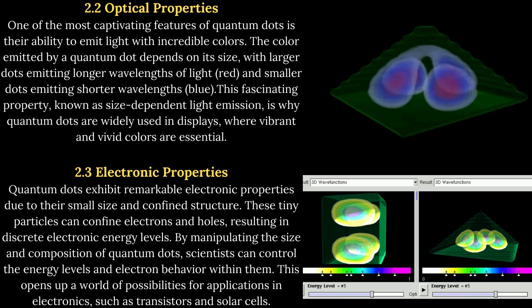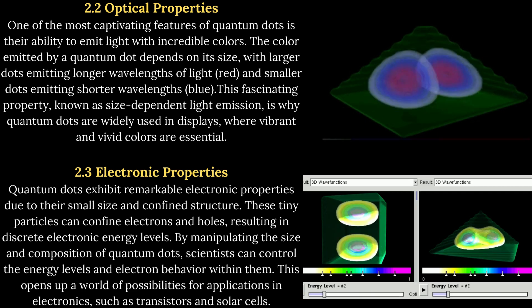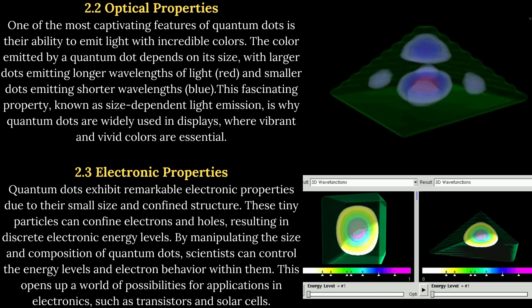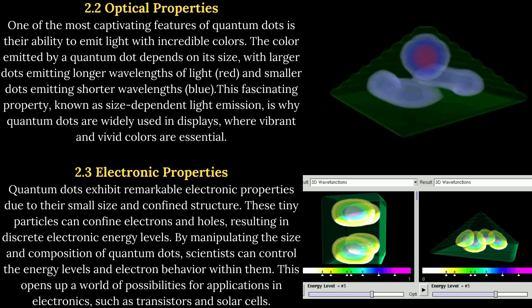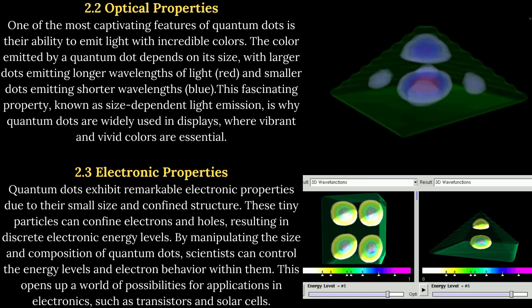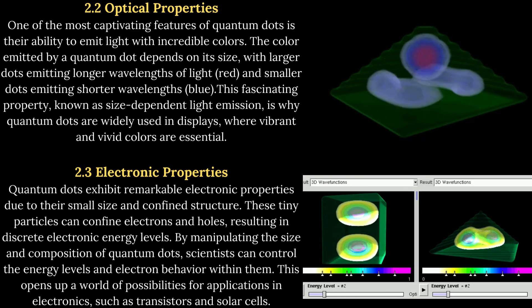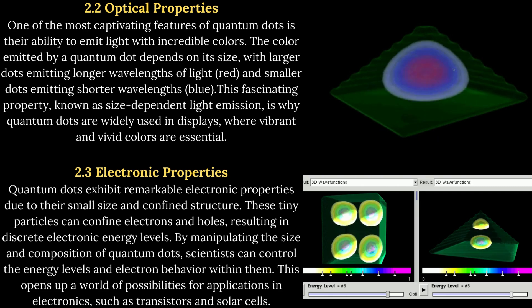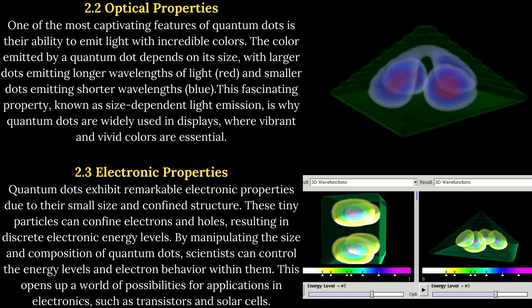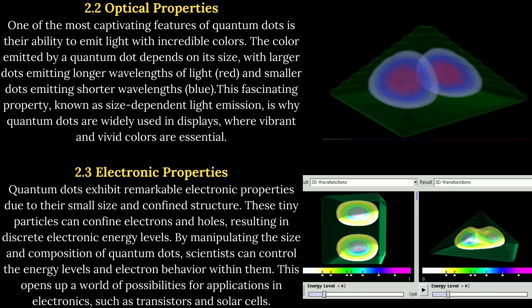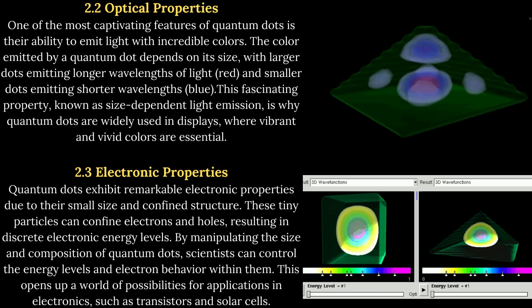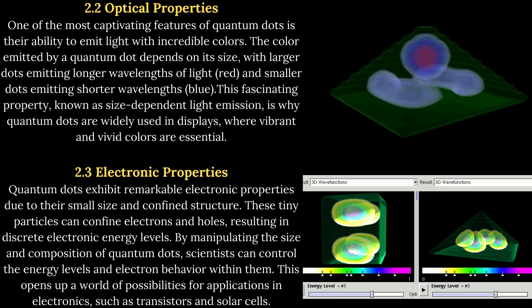2.3 Electronic Properties. Quantum dots exhibit remarkable electronic properties due to their small size and confined structure. These tiny particles can confine electrons and holes, resulting in discrete electronic energy levels. By manipulating the size and composition of quantum dots, scientists can control the energy levels and electron behavior within them. This opens up a world of possibilities for applications in electronics, such as transistors and solar cells.